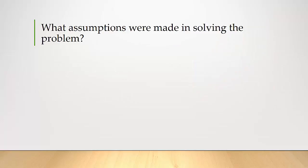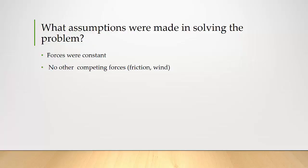It's helpful to state the assumptions made in solving this problem, as it helps us think about how we could incorporate other complexities. First, we assumed forces were constant — wind speed was always 2 meters per second whether in Buda, Iceland, or in between. Second, we assumed no other competing forces: no friction, no changing wind speeds, no drag. Third, we assumed straight lines, allowing us to use the Pythagorean theorem in the Cartesian plane — whereas in reality we're on the surface of the earth dealing with spherical coordinates. These assumptions simplified the problem.